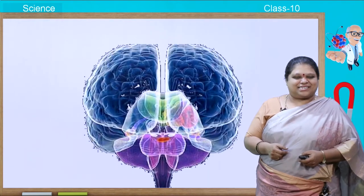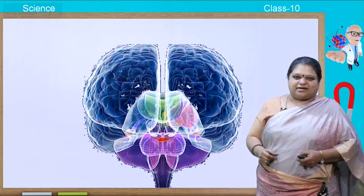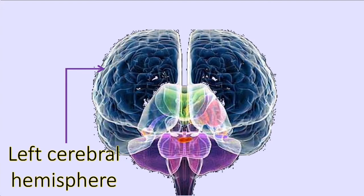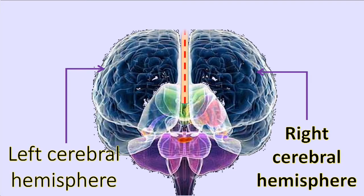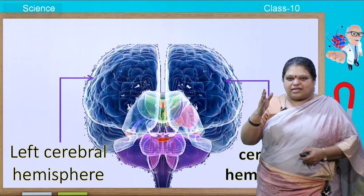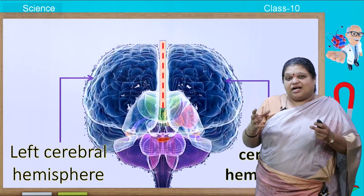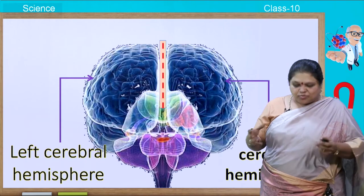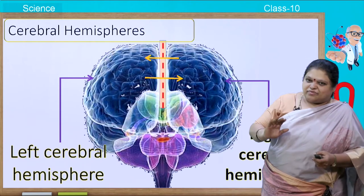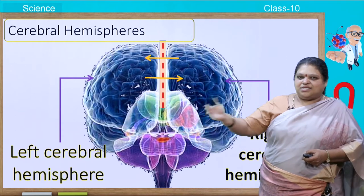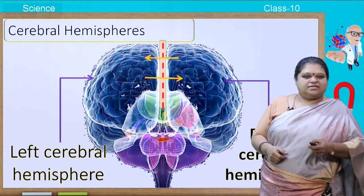If you look at the cerebrum from a different angle, you can see there are two hemispheres — the left cerebral hemisphere and the right cerebral hemisphere. They are not separated; there is a small tissue called corpus callosum connecting both hemispheres. These cerebral hemispheres send messages from one part to another, and there is constantly an exchange of impulses taking place.